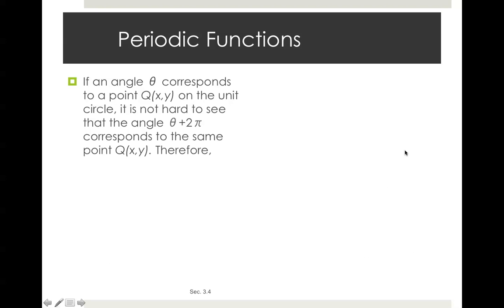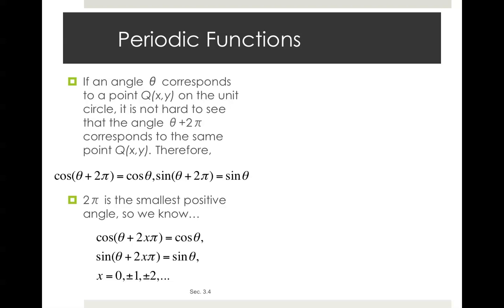If an angle theta corresponds to a point q(x,y) on the unit circle, it is not hard to see that the angle theta plus 2π corresponds to the same point q(x,y). Therefore, cosine of theta plus 2π equals cosine theta, and sine theta plus 2π equals sine theta. 2π is the smallest positive angle. So we know that cosine of theta plus 2xπ equals cosine theta, sine of theta plus 2xπ equals sine theta, for any x that is 0, positive negative 1, positive negative 2, and so on and so forth.